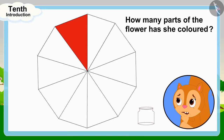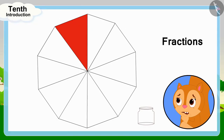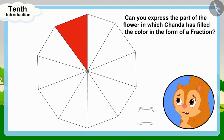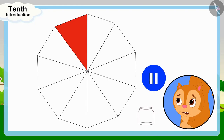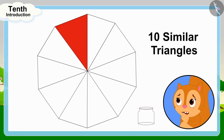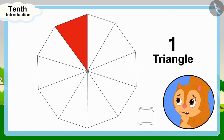Children, do you remember fractions? Can you express the part of the flower in which Chanda has filled the color in the form of a fraction? If you wish to, you may stop the video and find the answer. This flower is made up of 10 similar triangles and Chanda has colored one of these triangles.